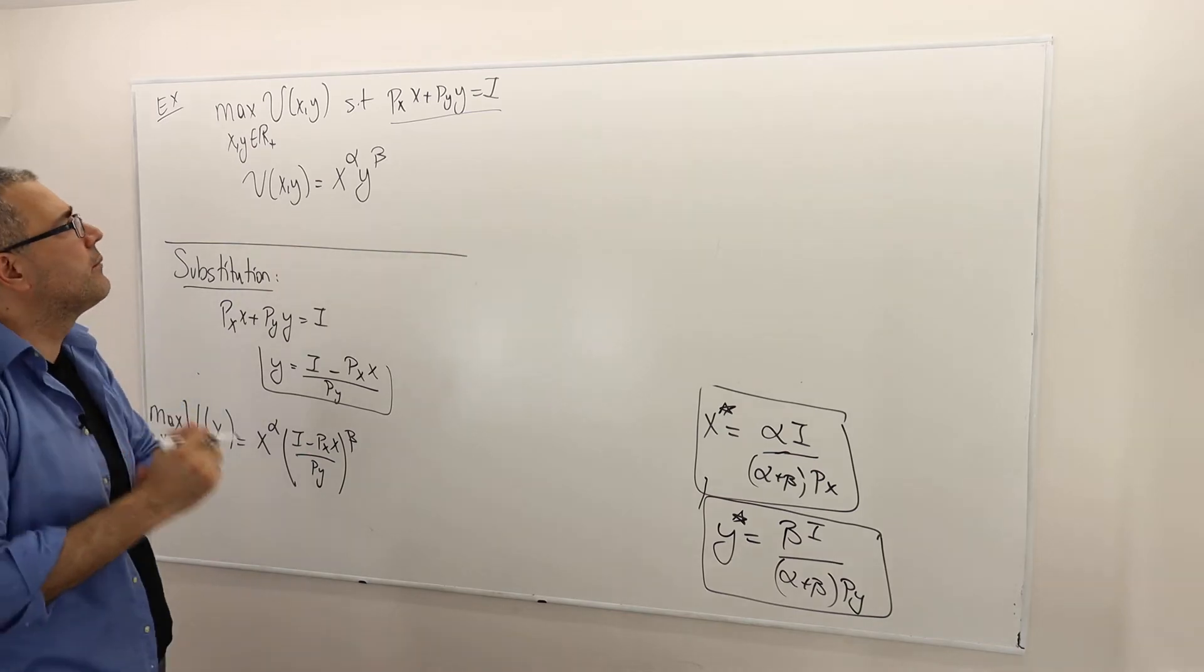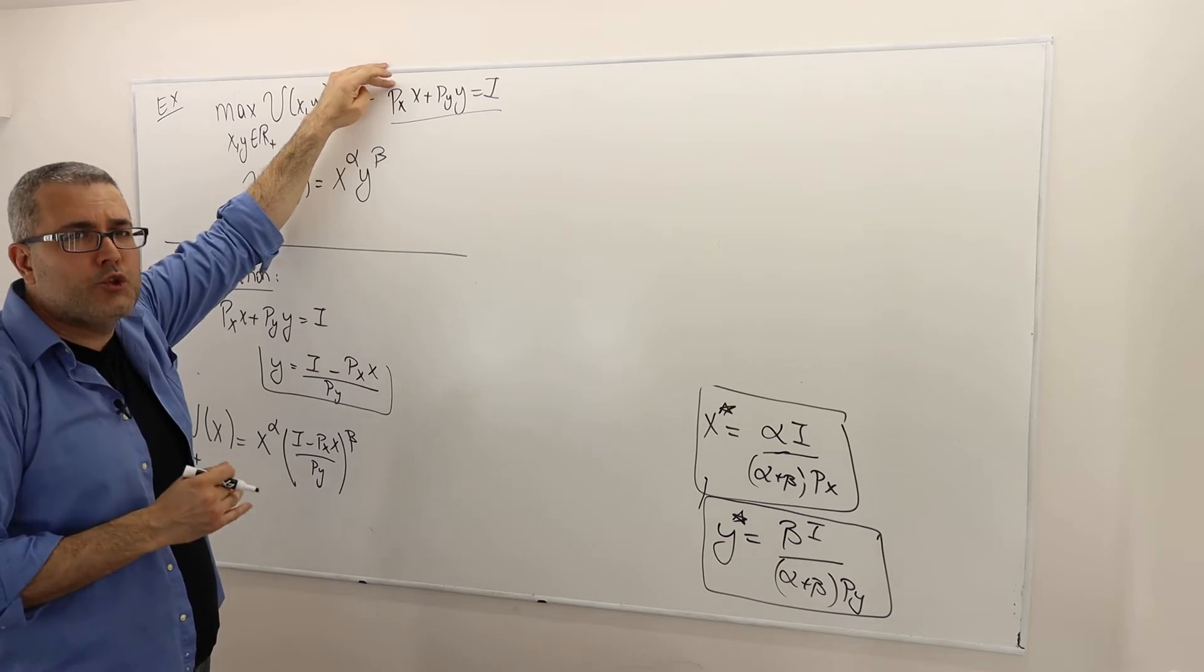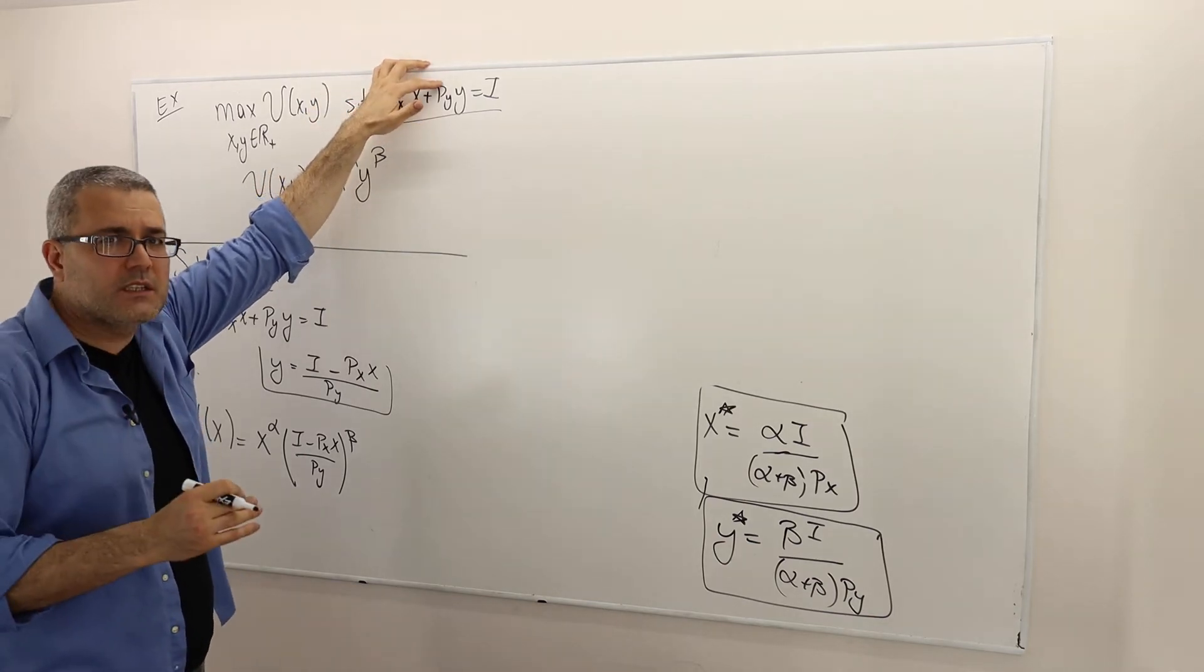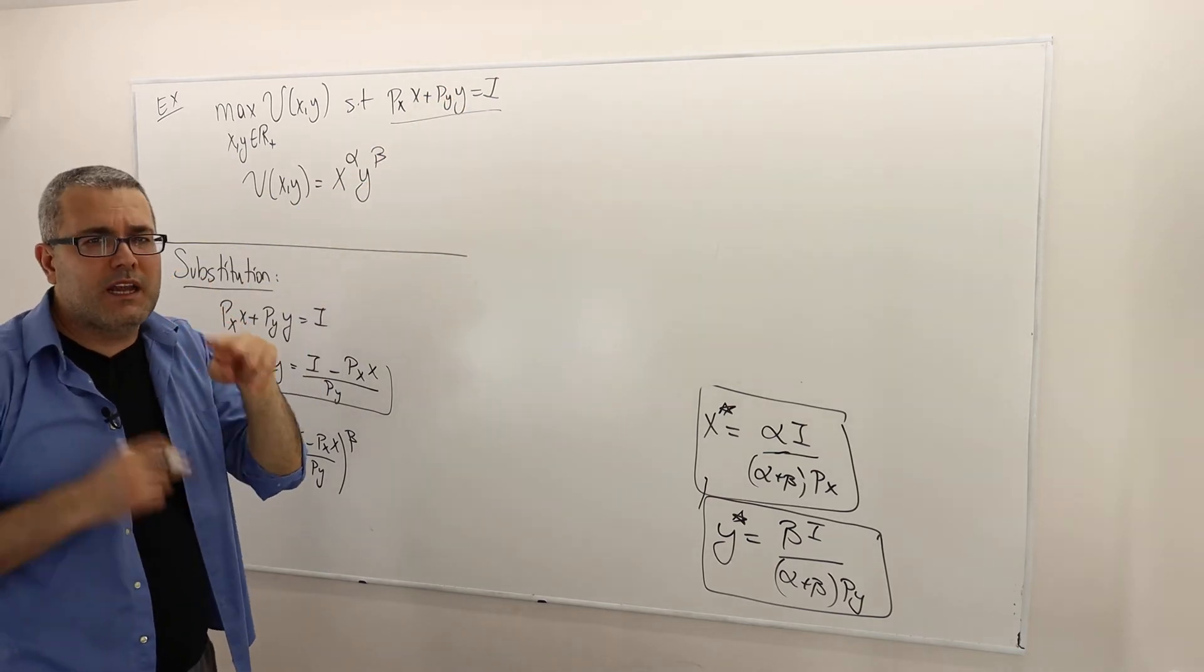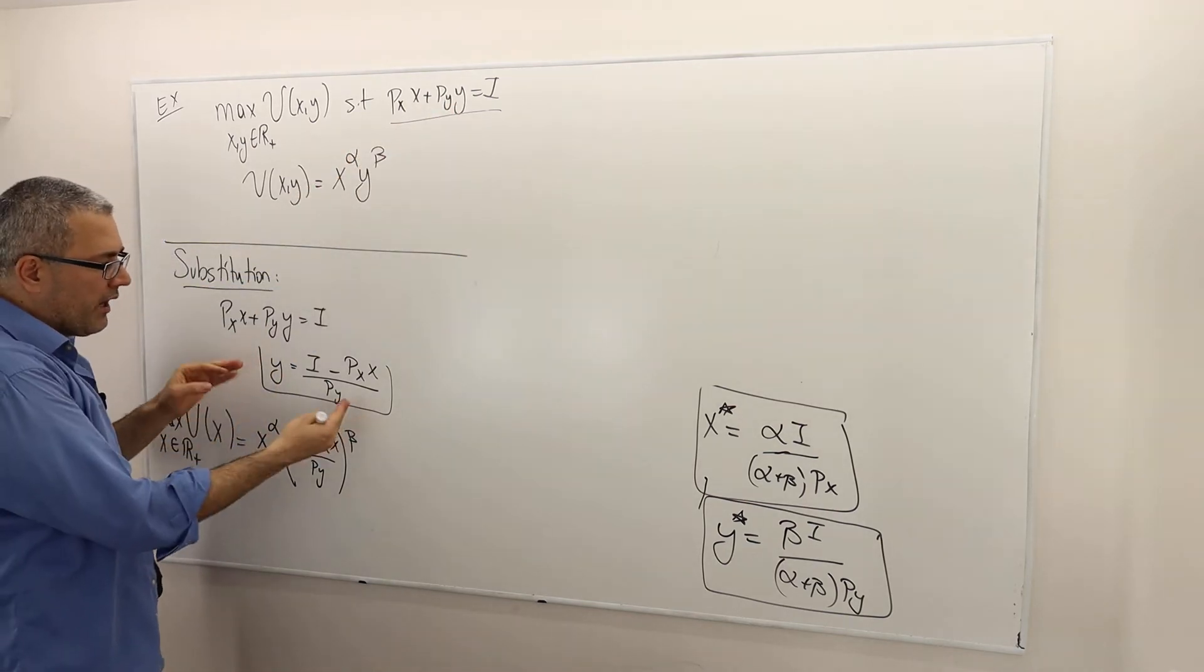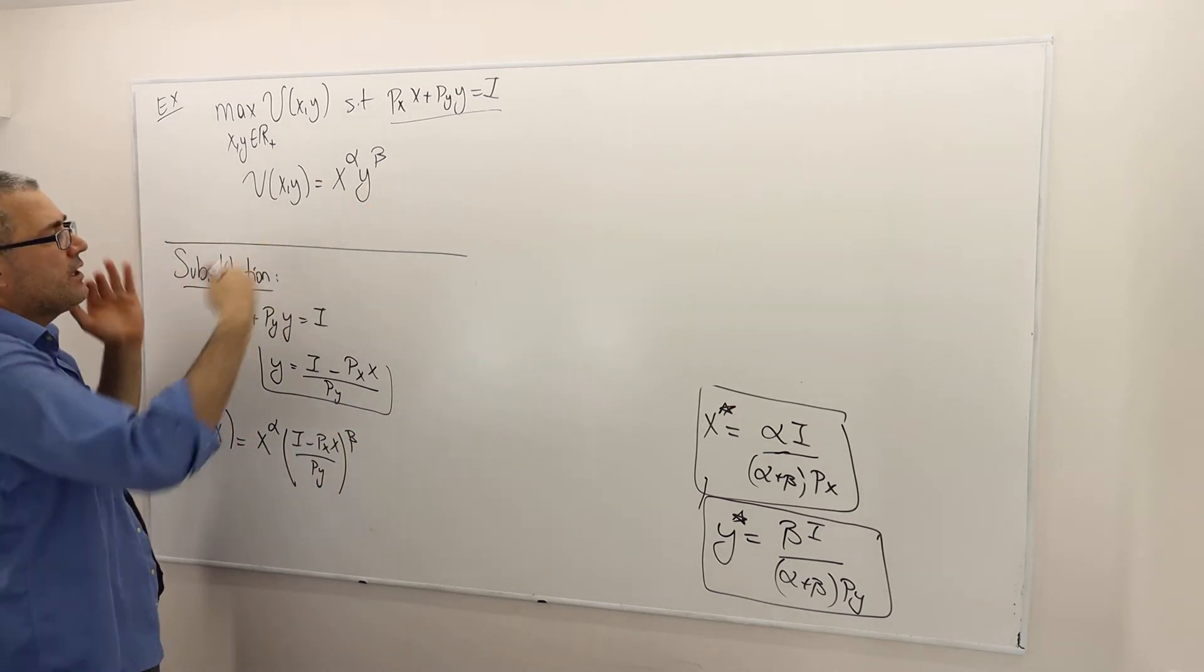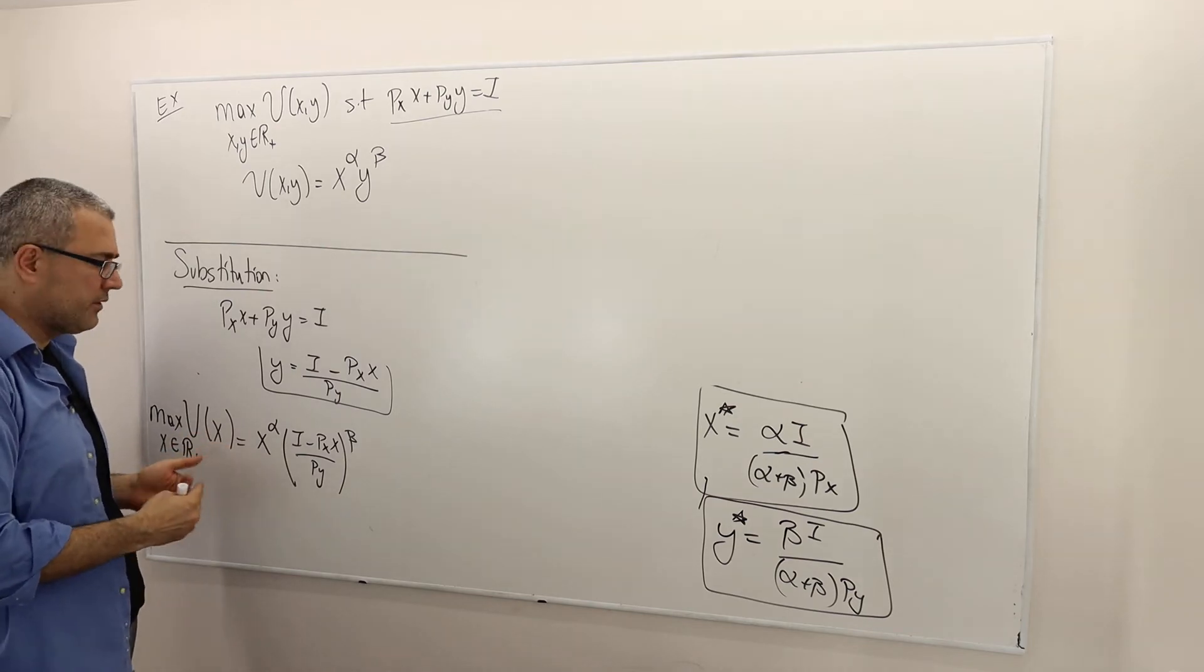Actually, they're constant numbers, real numbers. What else? The PX is constant number. We assume we know it. We know the value of it. PY is also constant and income is also constant. So there are only two variables that can change, that can be chosen, X and Y. So therefore, here I substitute Y with this term. So therefore, my entire optimization problem reduced down to a one parameter optimization problem.